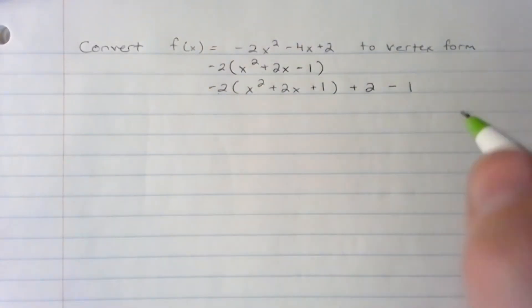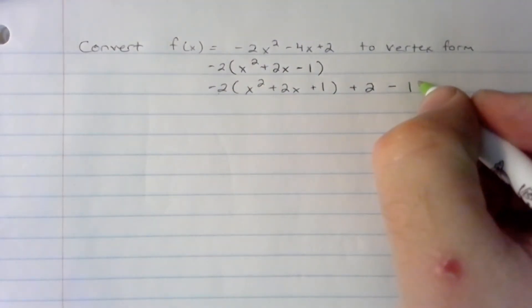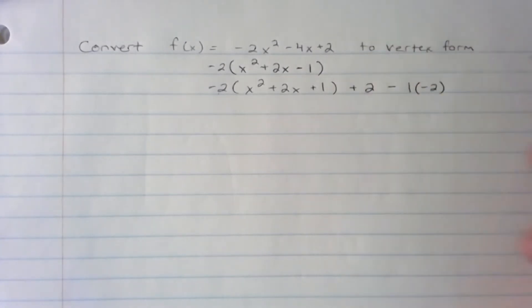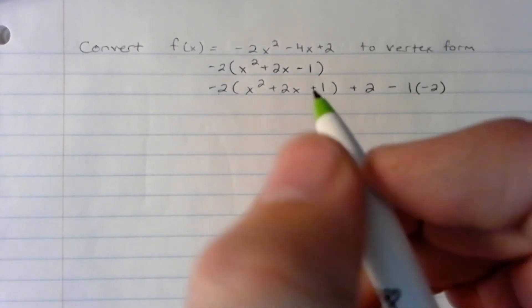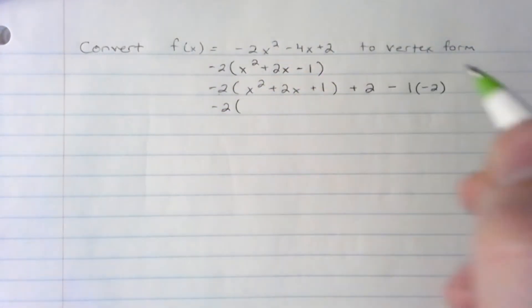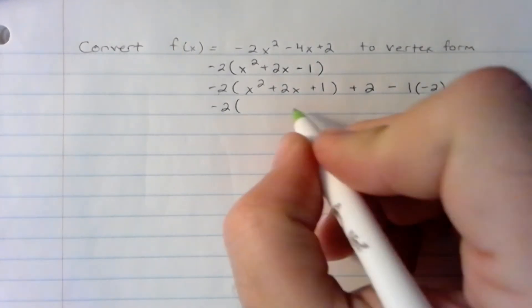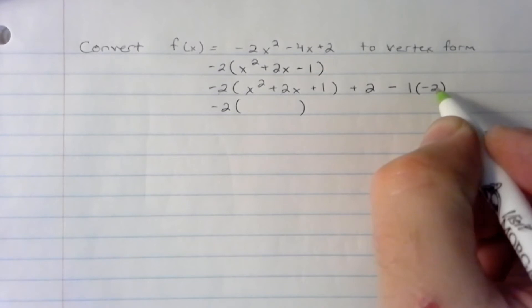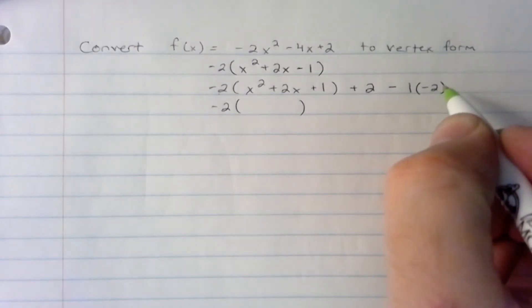x squared plus 2x plus 1, I can rewrite that as x plus 1 quantity squared. If I were to foil this out, I would get what was in the parentheses here, right above it. I'm just going to carry that down right here, and there is vertex form.